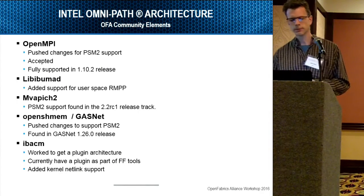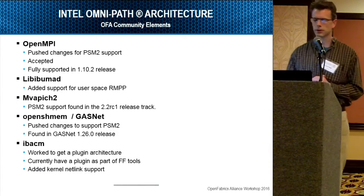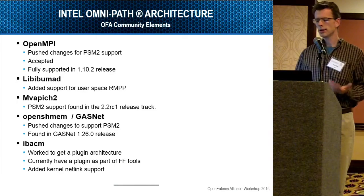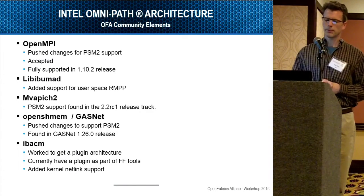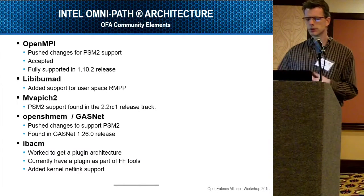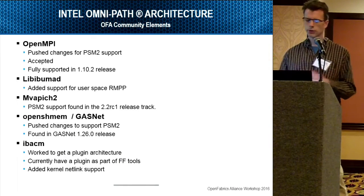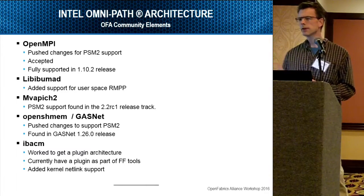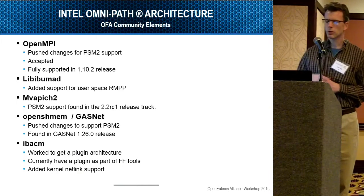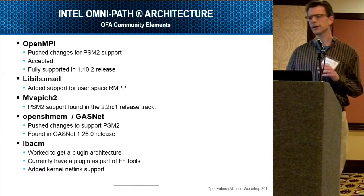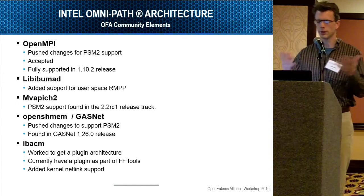Regarding IBACM — Ira talked about this yesterday. It really has to do with how we use PathRecords and not just hard-coding your LIDs and PathRecords into your applications. We wanted to use IBACM to distribute that PathRecord knowledge across the fabric. So we worked with Sean, the maintainer of IBACM, to create a plug-in architecture. We've supplied one plug-in and we're working with it — there are a lot more things we want to do. Another aspect is allowing the ULPs to access those PathRecords so they don't have to go out to the SA every time. We worked with the kernel community to create a Netlink interface from the kernel ULPs up to the IBACM daemon so those elements can benefit from the PathRecord cache in IBACM.